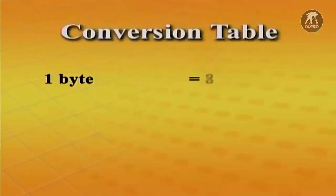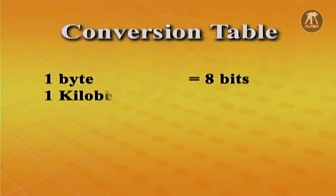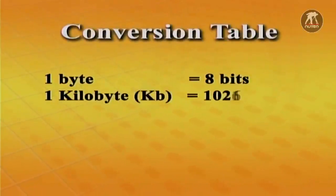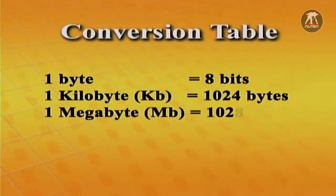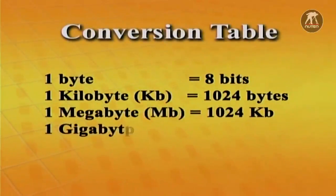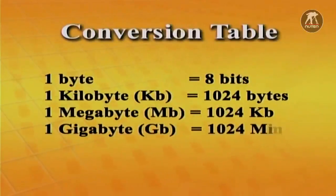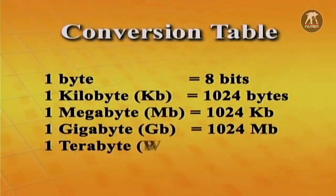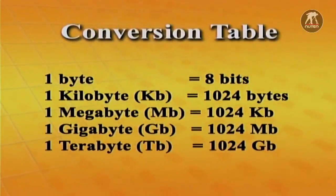What is a gigabyte and a terabyte? The amount of information that can be stored by a digital device is measured in bits. Bits are usually assembled into a group of 8 to form a byte. Computer storage and memory is often measured in megabytes (MB), gigabytes (GB), and terabytes (TB).